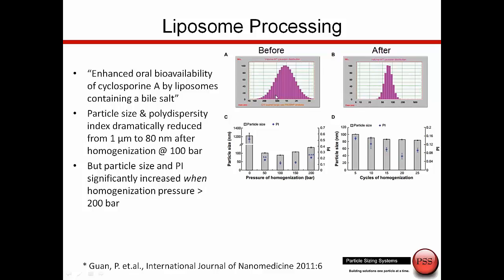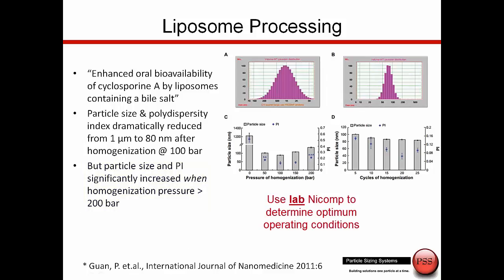The result before the homogenizer step is up near a micron — closer to the upper limit of DLS. After processing through the homogenizer, we see a large decrease down to about 80 nanometers. They found that 100 bar worked very well, but increasing the homogenizer pressure to 200 bar caused some disruption of the liposomes and the data was not as attractive. This is using the lab instrument to understand the proper processing conditions for creating these liposomes.